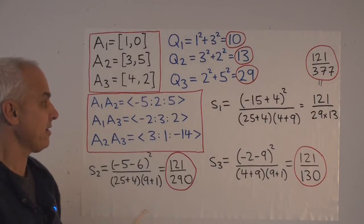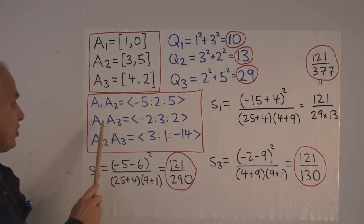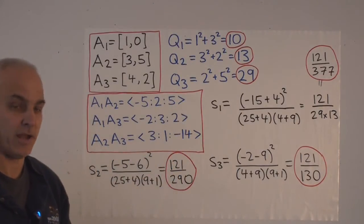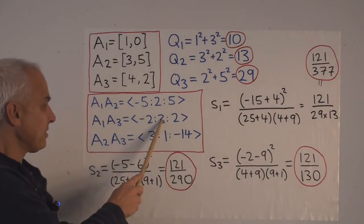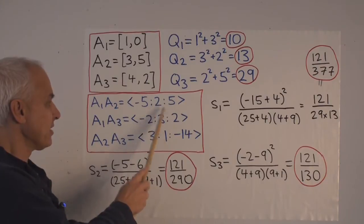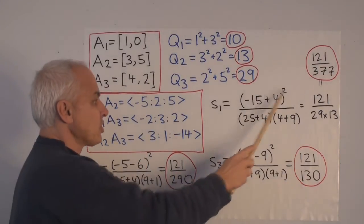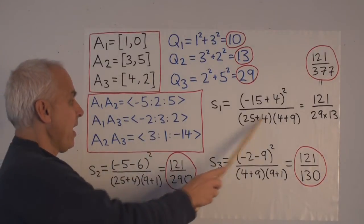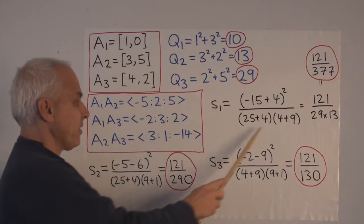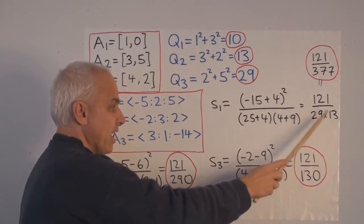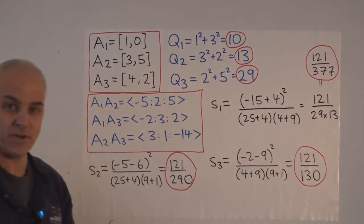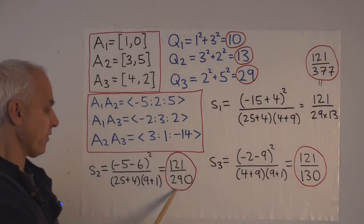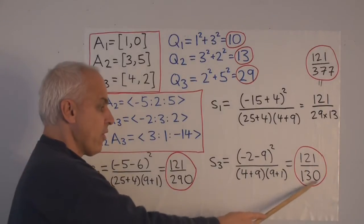Now to calculate spread s1 — the spread between the two lines through point a1 — we compute: (a1·b2 minus a2·b1)² in the numerator, which gives (−15 + 4)² = 121. The denominator is (5² + 2²) times (−2² + 3²), giving 29 times 13, so s1 = 121/377. Similarly, s2 = 121/290 and s3 = 121/130.